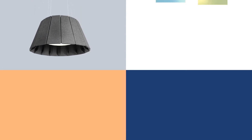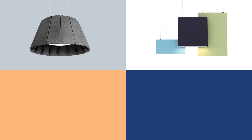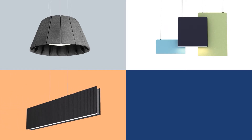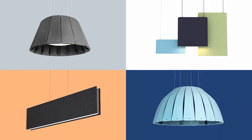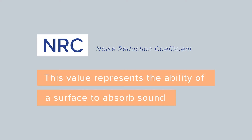The one way that as a lighting designer you can compare apples with apples is to use universal methods for calculating acoustic values. You may have heard of NRC, the noise reduction coefficient of a product. This value represents the ability of a surface to absorb sound. The higher the NRC, the better the sound absorption.